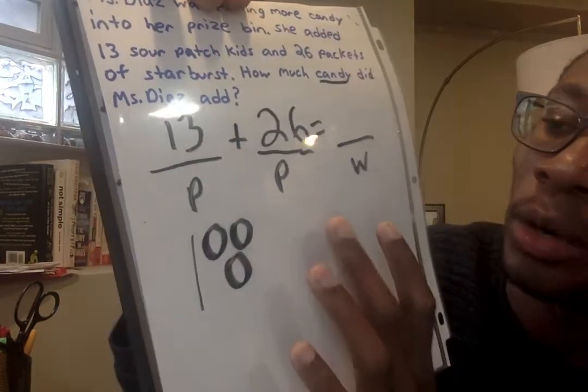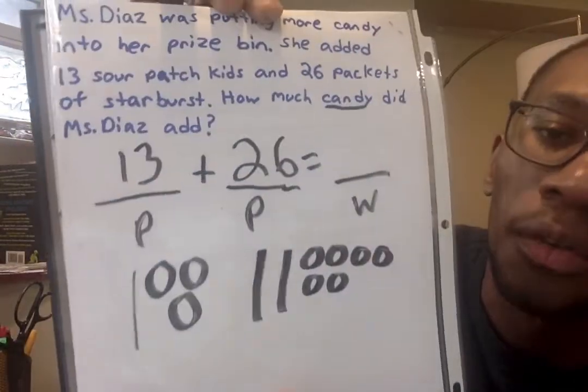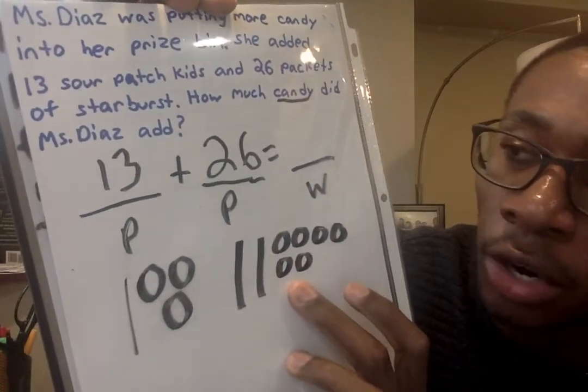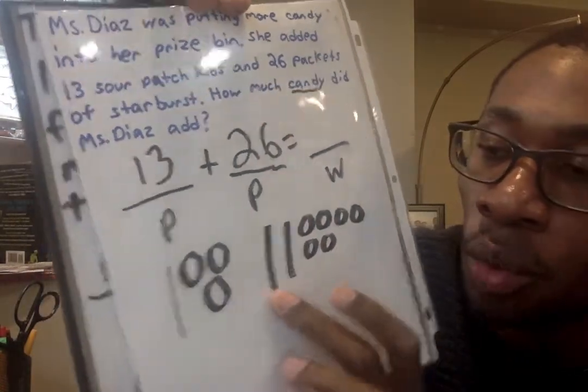And then for 26, I go 10, 20, 21, 22, 23, 24, 25, 26. So for 26, I have two quick tens to make 20 and then six circles for my ones. So I have 26 altogether.